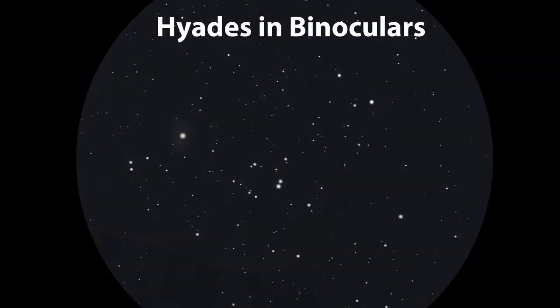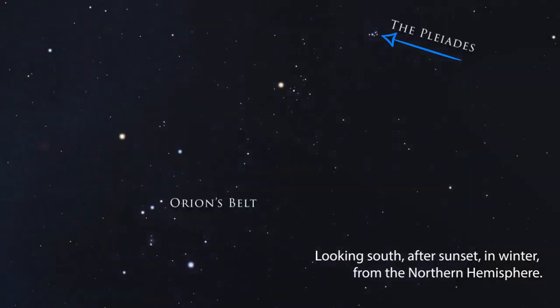To recap, these were the Pleiades, the Hades, and the Orion Nebula found here, here, and here. And remember these are perfect targets for telescopes too, especially the Orion Nebula.